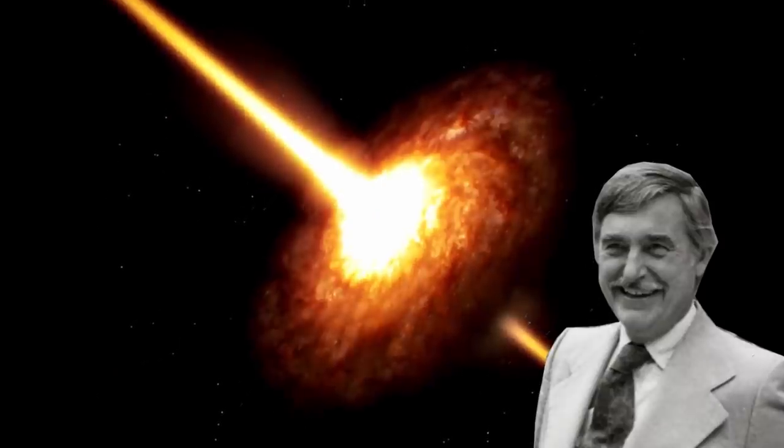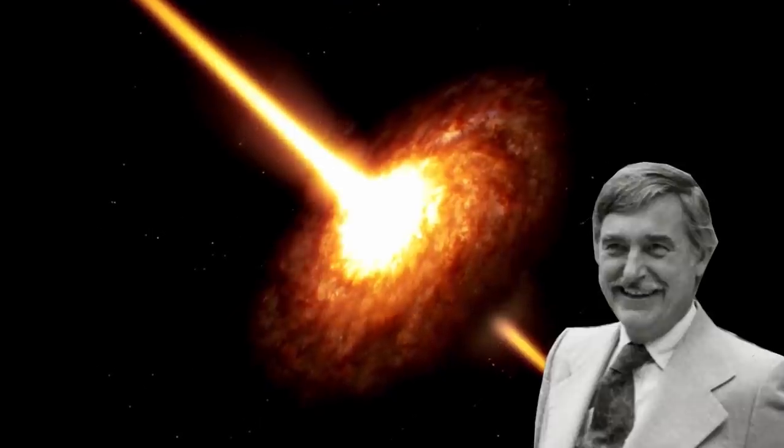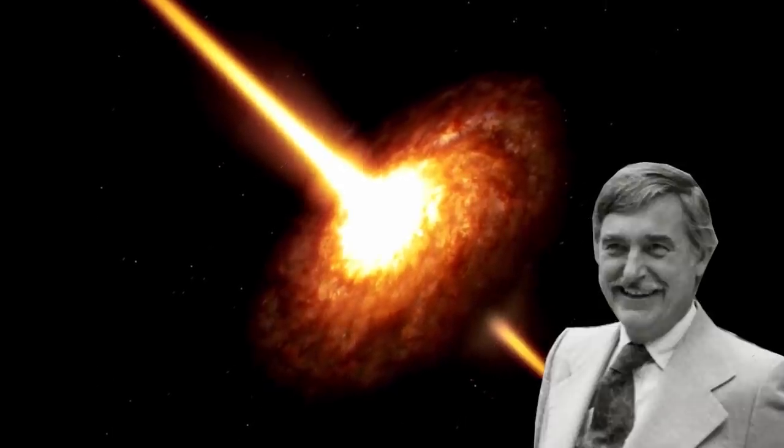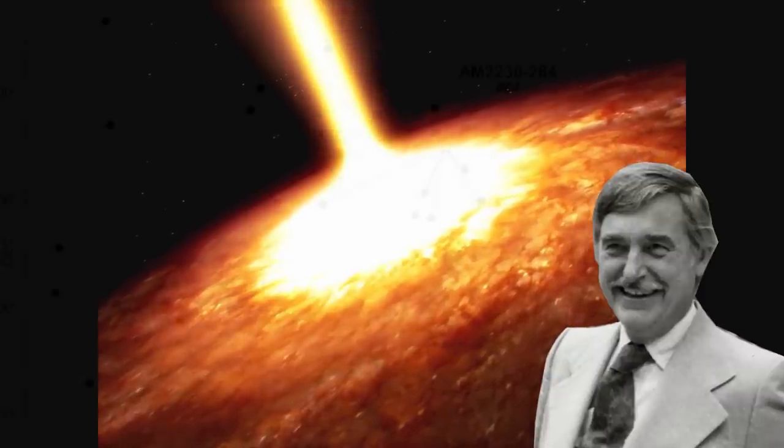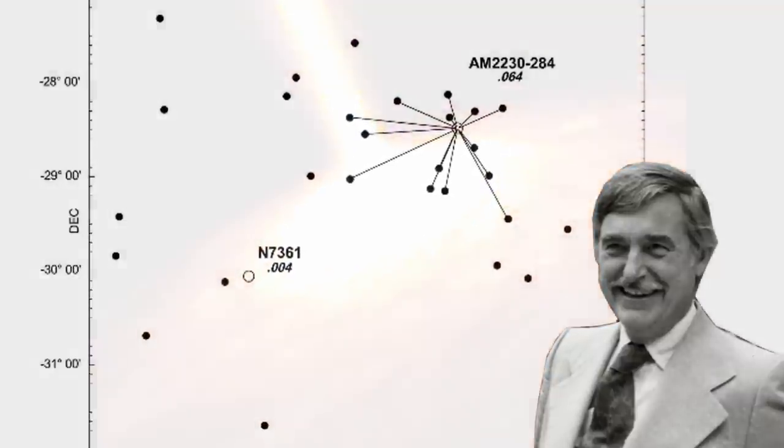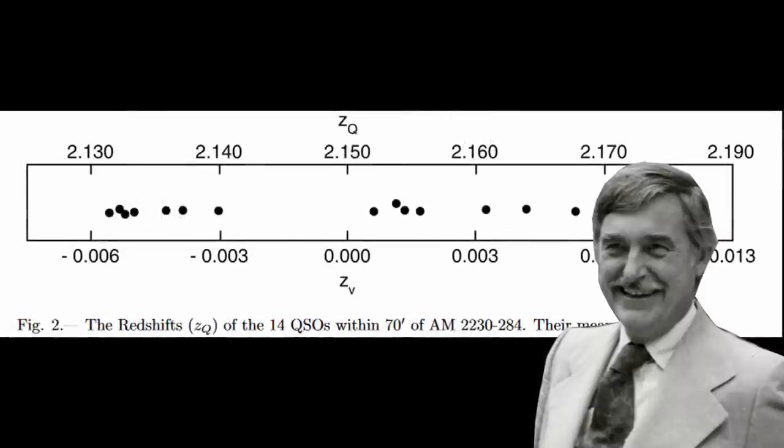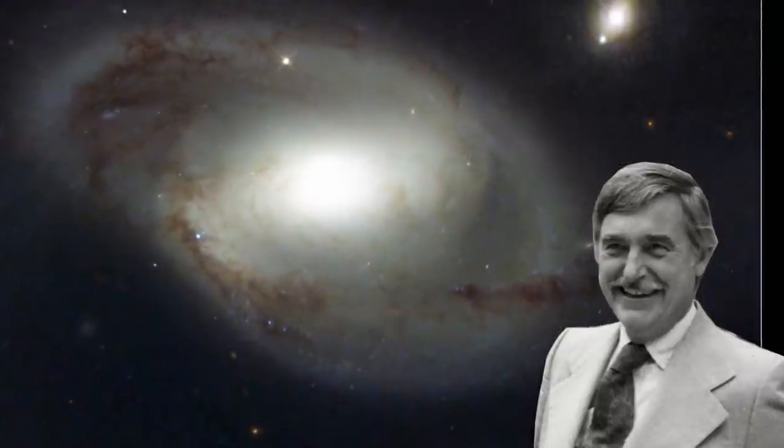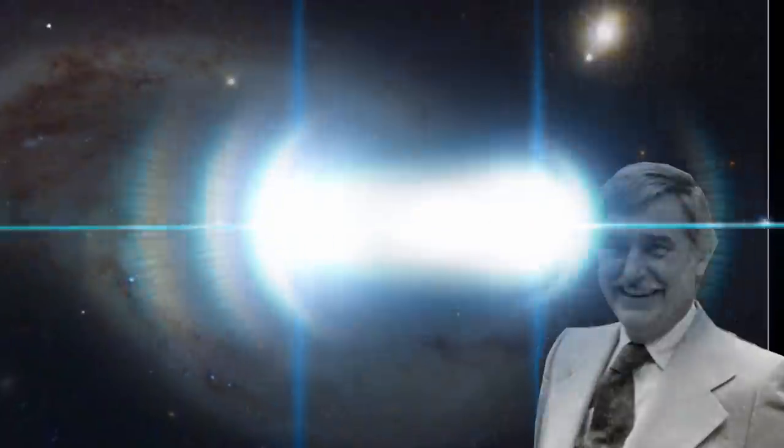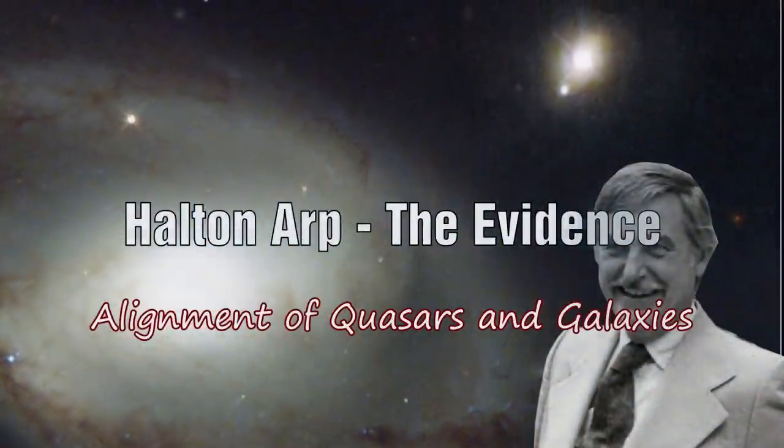Halton Arp spent the majority of his life trying to convince others that there was a fundamental misunderstanding of redshift. In this series I would like to explore some of the evidence that Halton collected. In this episode we will examine the data Arp collected showing the connection between an active galaxy and quasars and show that these do not appear to be randomly distributed, but there appears to be a clear pattern in the data.